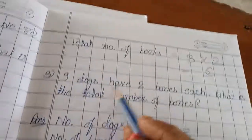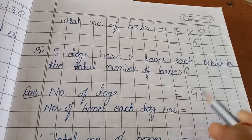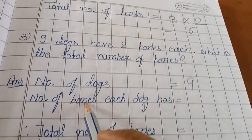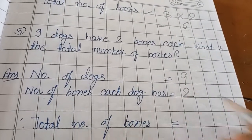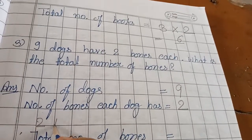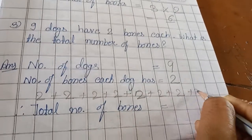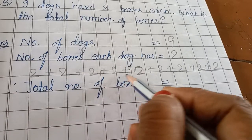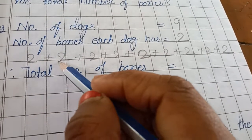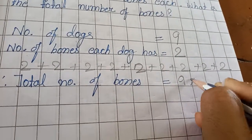One more question: Nine dogs have two bones each. Again, what is the first statement? Number of dogs = nine. And two bones each — har ek dog ke paas do bones hai. So the second statement: Number of bones each dog has = two. Now, adding two nine times would take too much time — two plus two is four, plus two is six, plus two is eight, and so on. So we will write it in short form as nine times two.